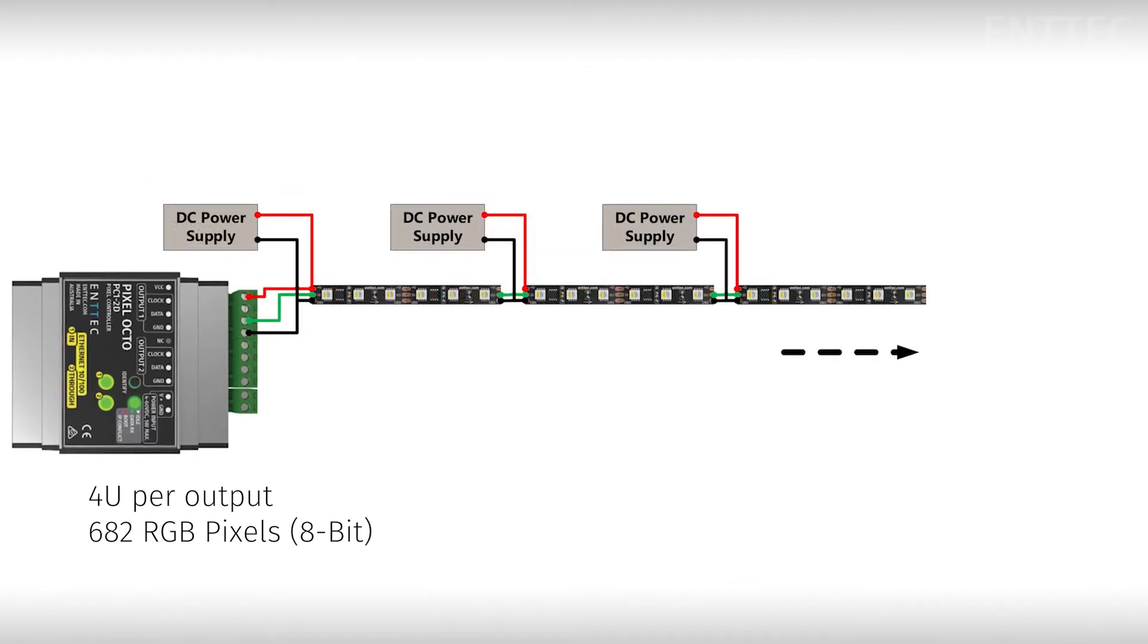Using a 12 volt grouped pixel tape like our 8PXW60-F-12-B, where each three LED grouping is one controllable pixel, you could be controlling just over 25 meters from one 4 universe output. You can repeat the multi single power injection method as many times as you need to get the most out of your controller.